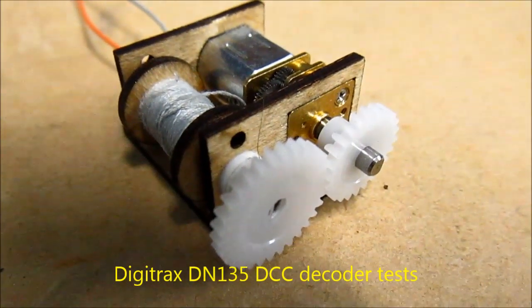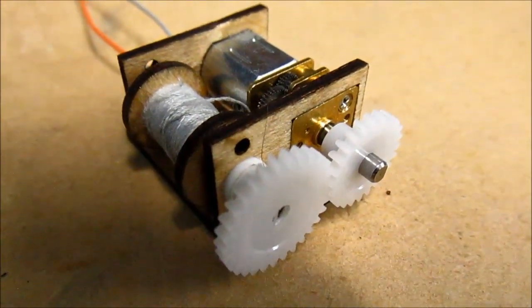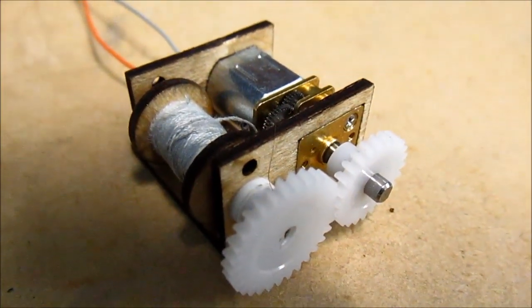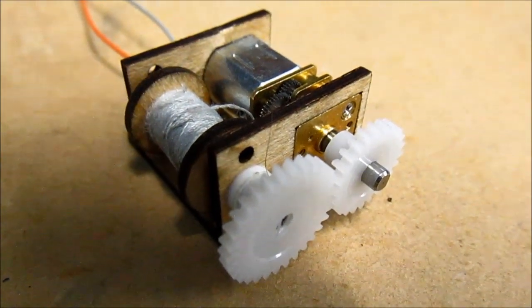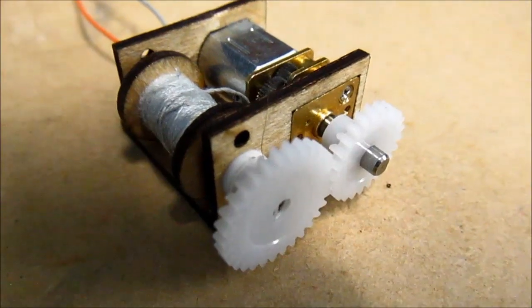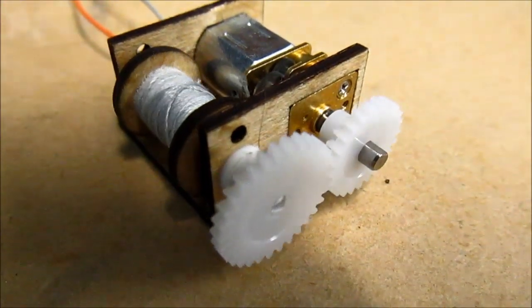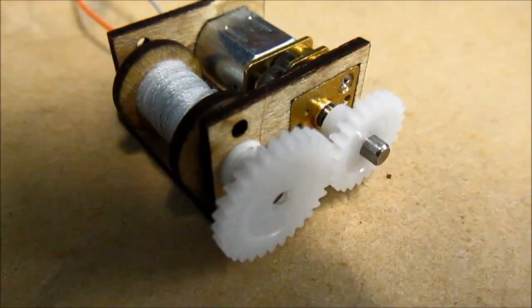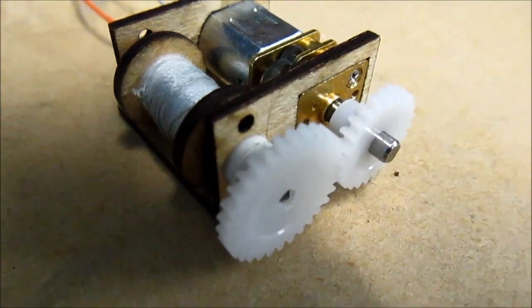Now what I've done is I've connected the winch up to Digitrax DN135 decoder just for a decoder test, and just wind the throttle up. I've got the throttle up around about less than one quarter. You can see it's running quite well.